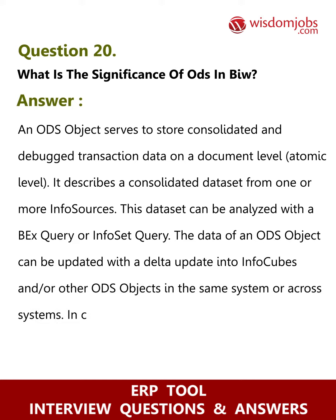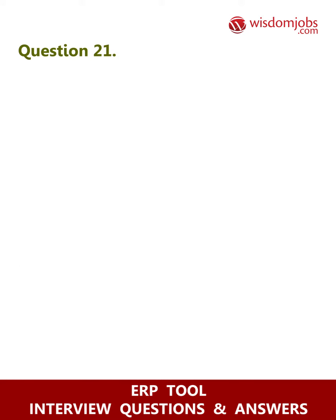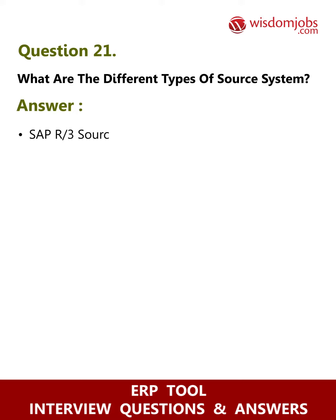In contrast to multi-dimensional data storage with InfoCubes, the data in ODS objects is stored in transparent flat database tables. Question 21: What are the different types of source systems? Answer: There are three source systems — SAP, BW flat files, and external systems.